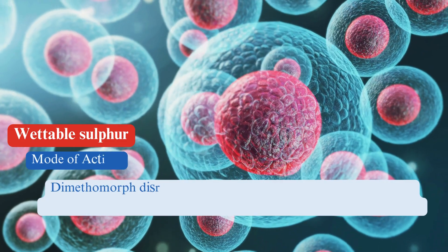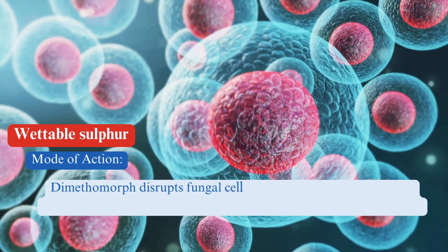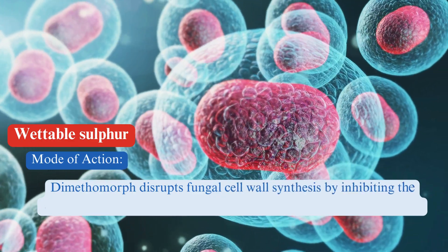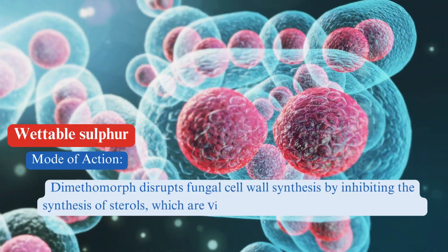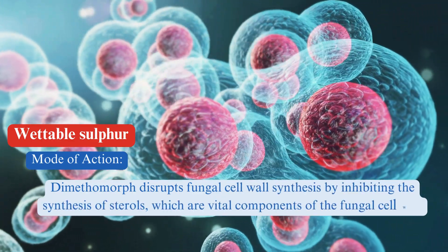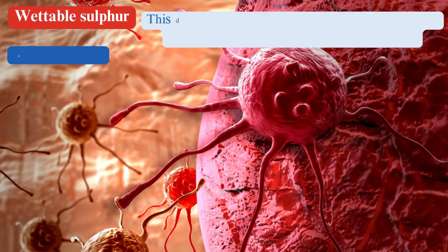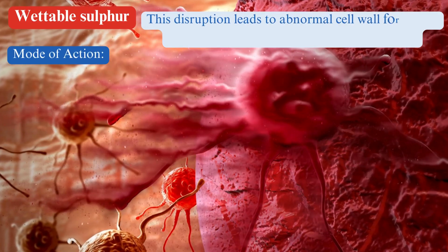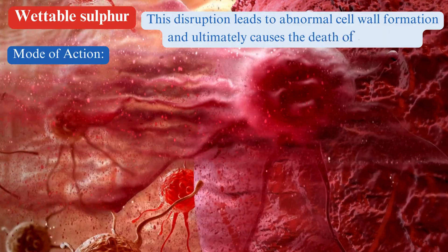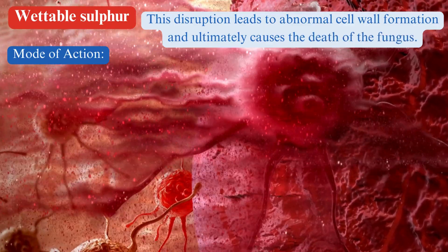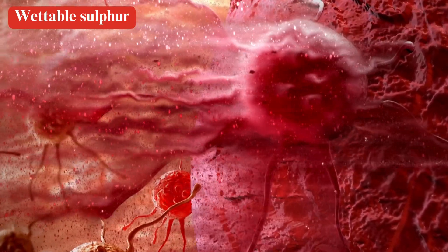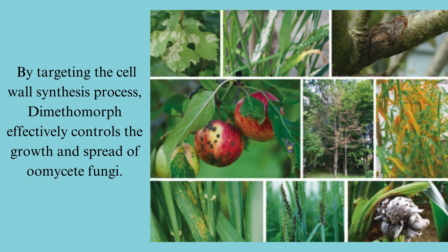Mode of action: Dimethomorph disrupts fungal cell wall synthesis by inhibiting the synthesis of sterols, which are vital components of the fungal cell wall. This disruption leads to abnormal cell wall formation and ultimately causes the death of the fungus. By targeting the cell wall synthesis process, dimethomorph effectively controls the growth and spread of oomycete fungi.